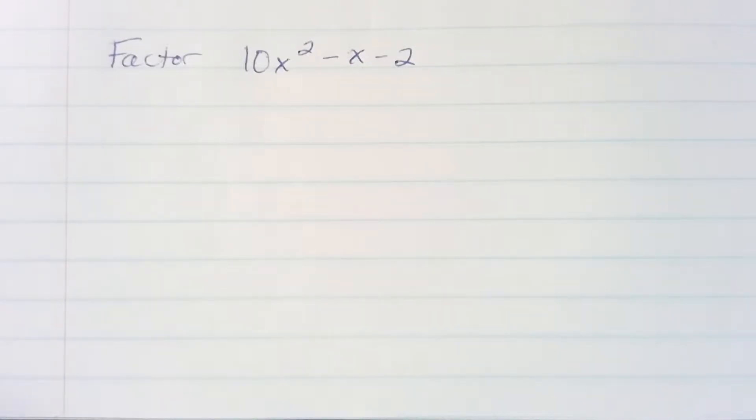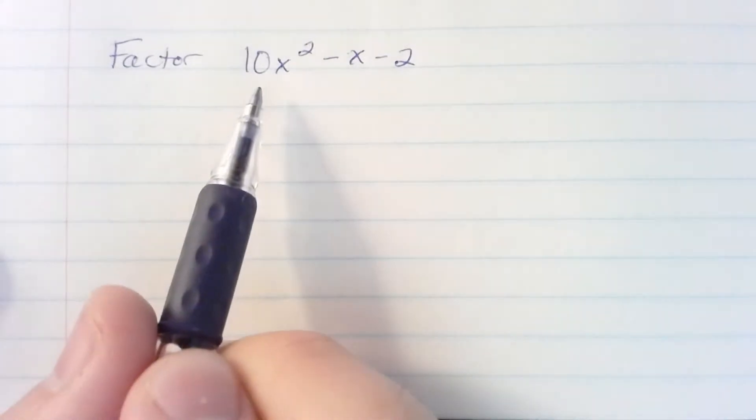In this video we're going to factor 10x squared minus x minus 2. We're going to use the AC method of factoring given that the A term is greater than 1.